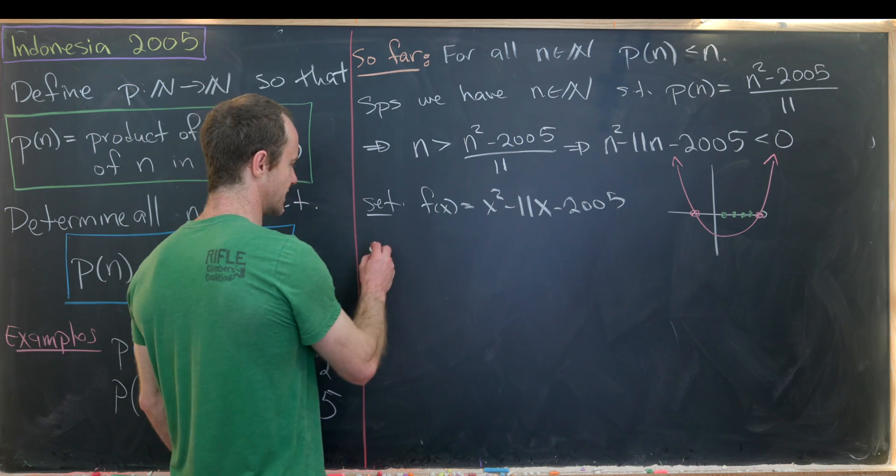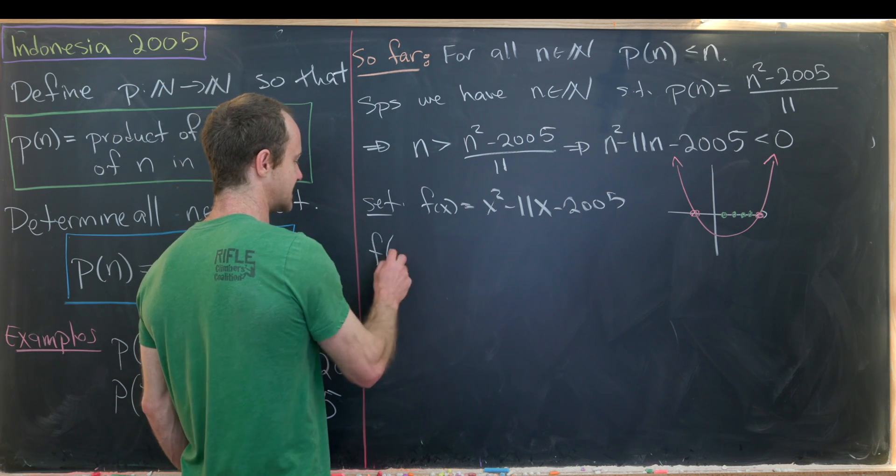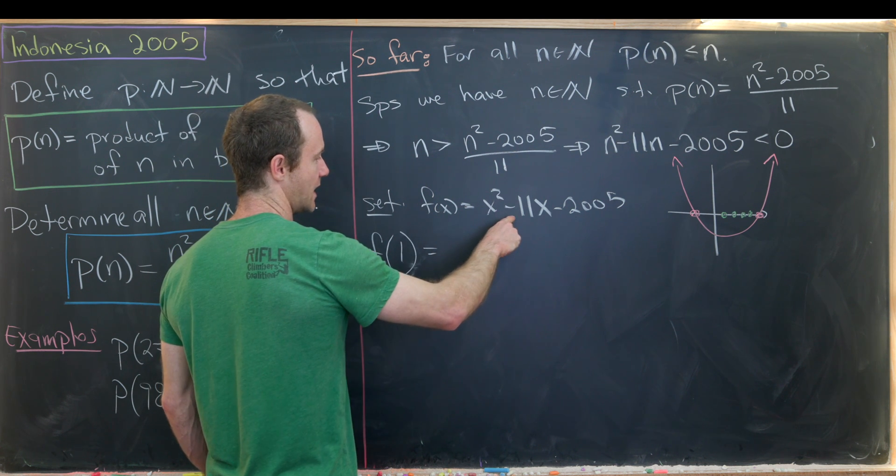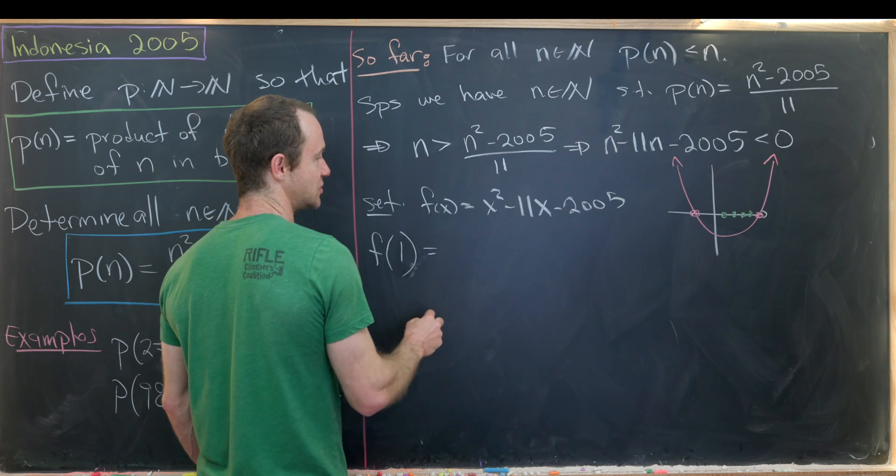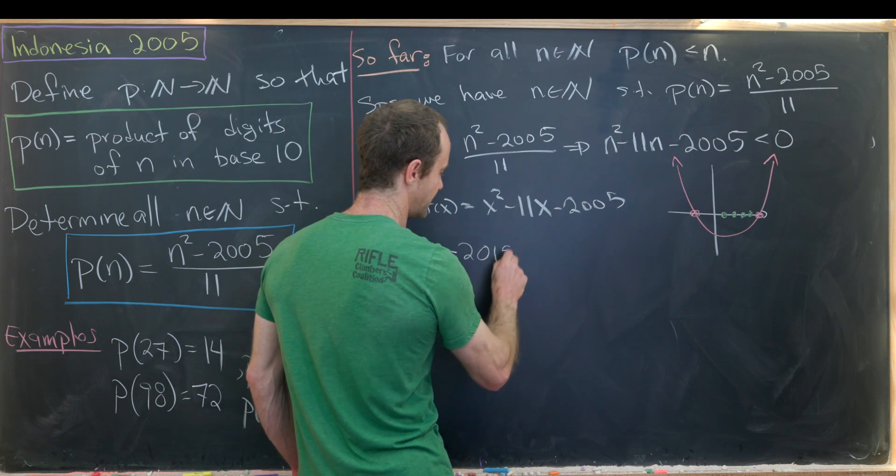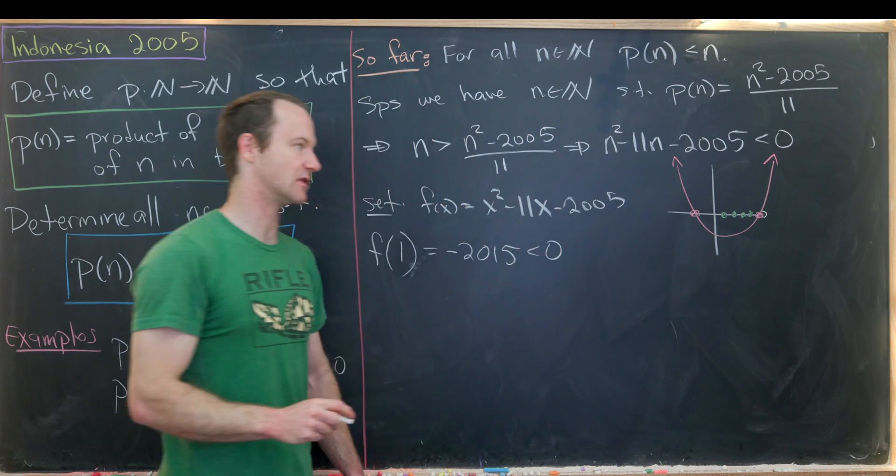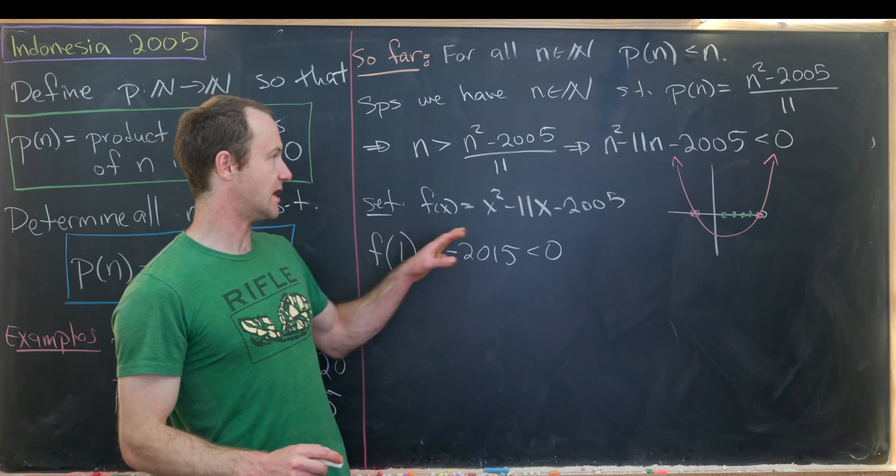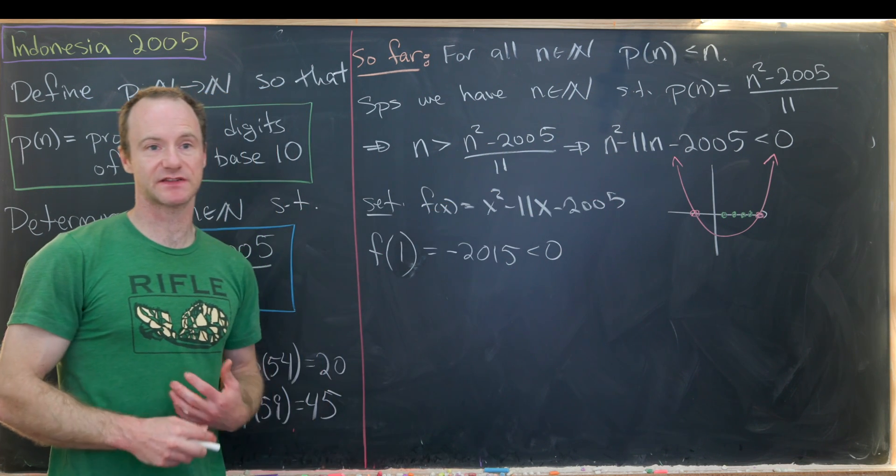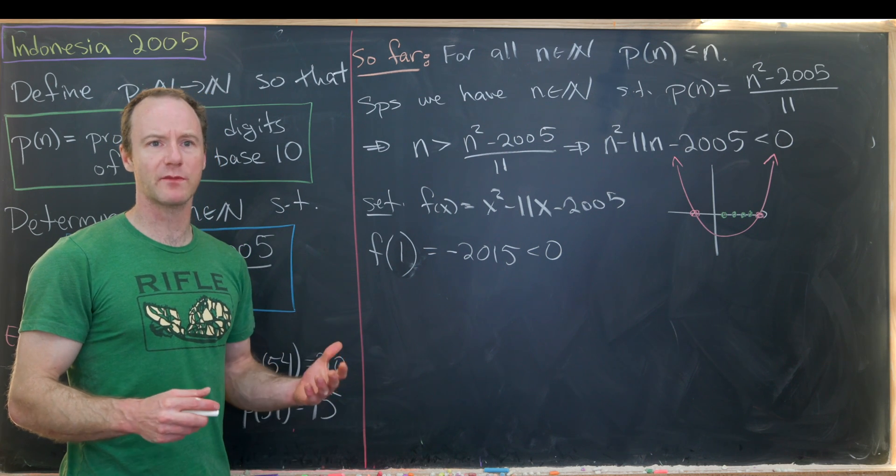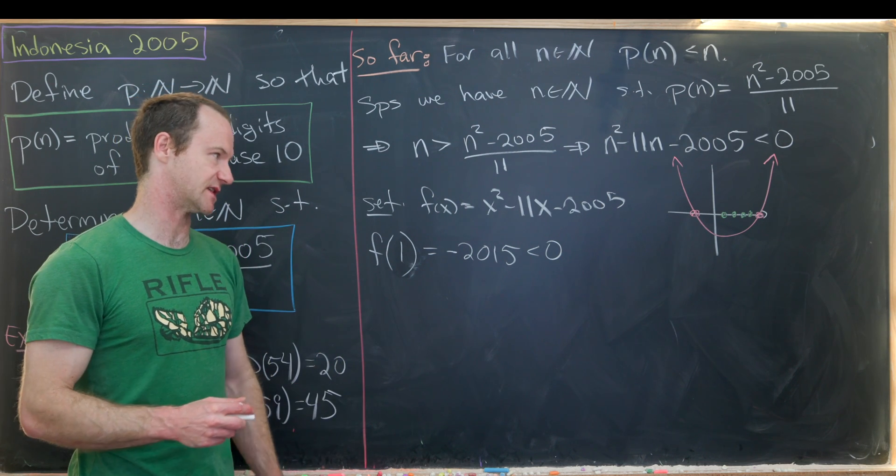Well let's maybe first notice that if we evaluate this at 1 we get 1 minus 11 minus 2005 that ends up being negative. Negative 2015 that is less than 0. So definitely for n equals 1 this inequality is satisfied. Now let's find a place where it's not satisfied. We don't have to worry about finding the first place where it's not satisfied. Let's just find any place where it's not satisfied.